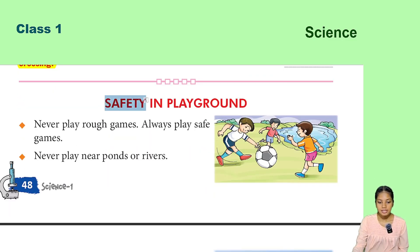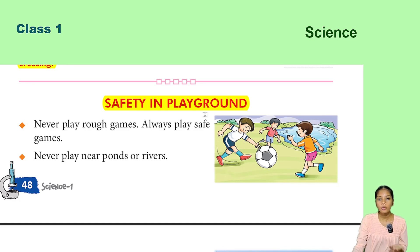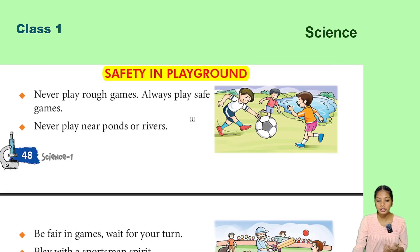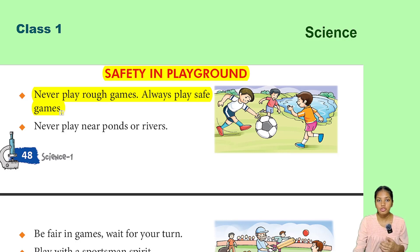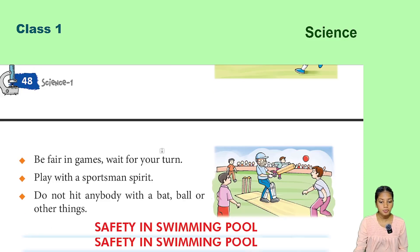Next is safety in the playground. When we go to the playground, we should focus on safety. Never play rough games — always play safe games so you don't get any injuries. Never play near ponds or rivers.